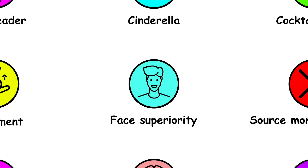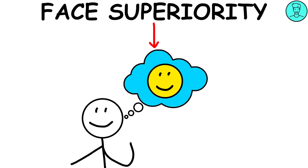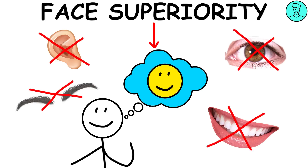Face superiority effect. The face superiority effect refers to how people perceive and remember human faces as a whole, instead of processing individual features of a face.